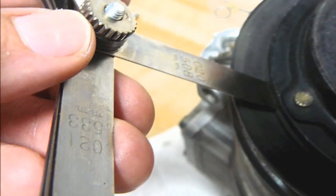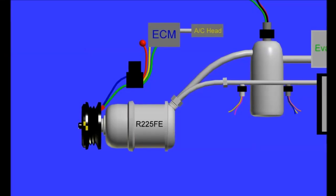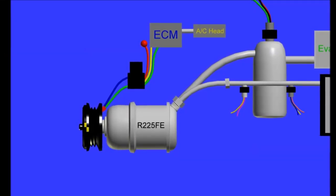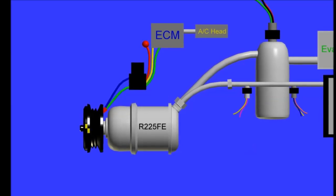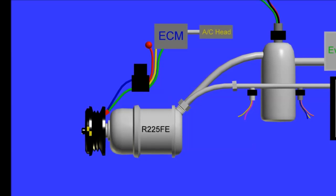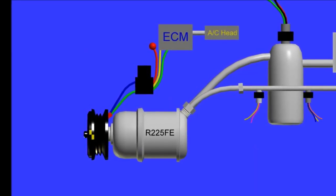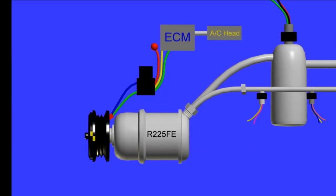And again, we're going to repeat ourselves here. It is the ECM that controls the compressor coil, the clutch itself. Of course, it actuates the relay and then the relay gives it power, and then the other side, which is the ground, is given by the ECM. Now the AC head commands the ECM and the ECM commands the compressor clutch to turn on.